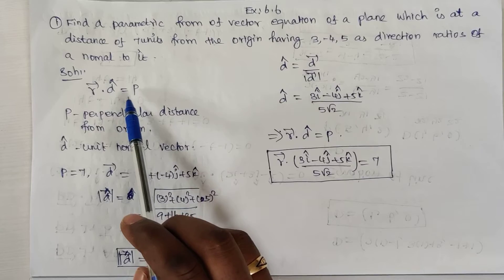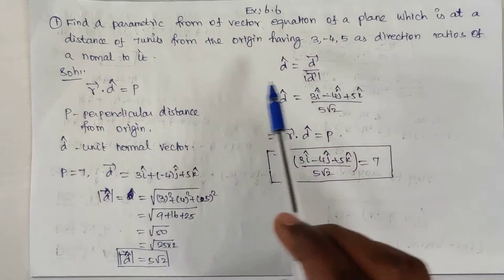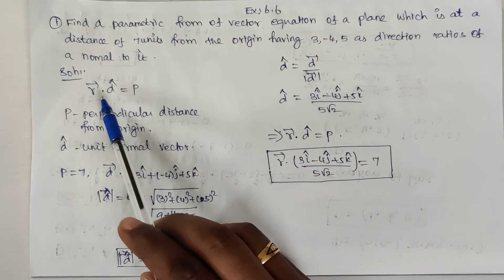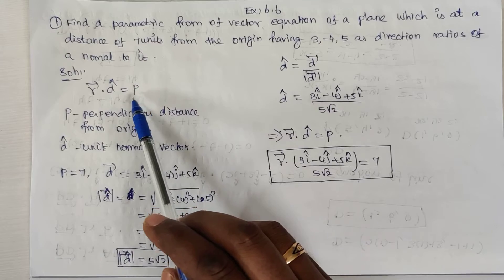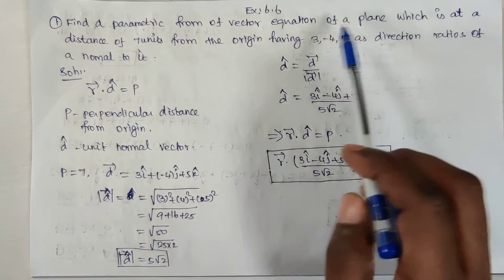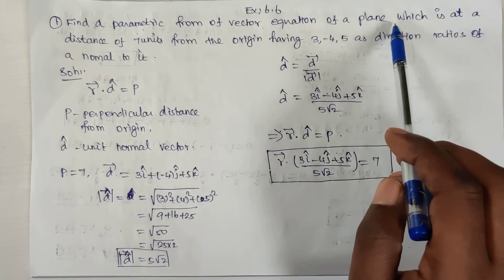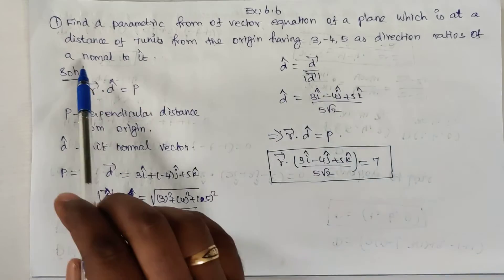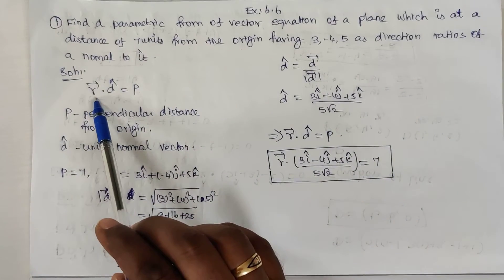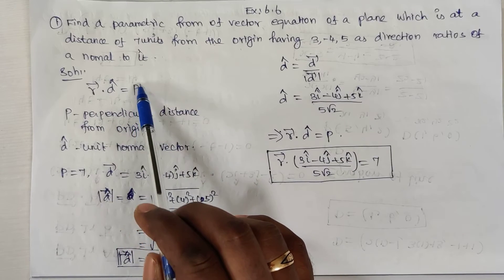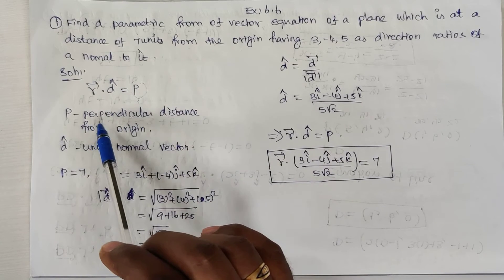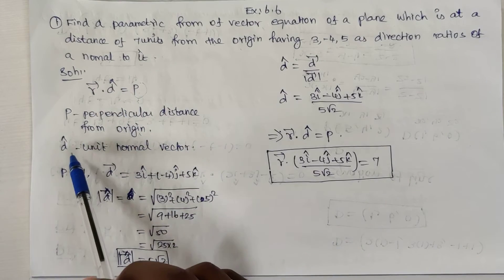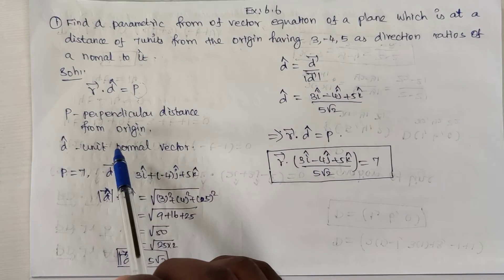The formula is r⃗ · d̂ = p, where p is the perpendicular distance from the origin to the plane, and d̂ is the unit normal vector. We need to find the vector equation of the plane which is at distance seven units from the origin, having the given direction ratios of the normal.